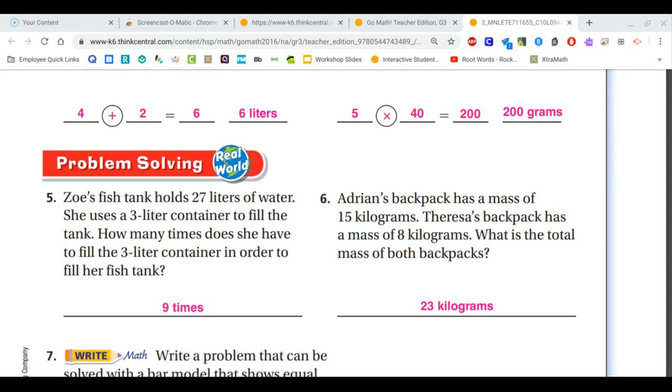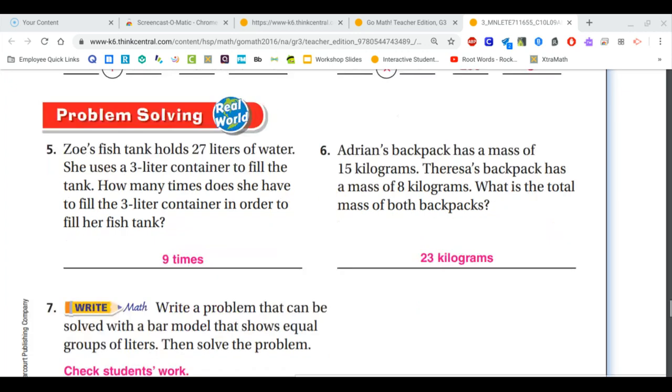For number six, we know that there are two different backpacks and that we need to know the total mass of both backpacks. So we need to add 15 and eight, which gives us 23 kilograms.